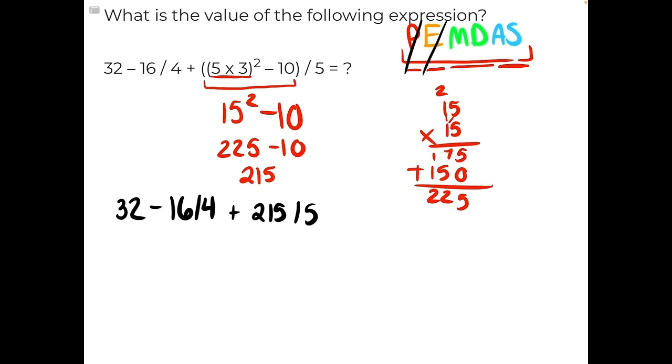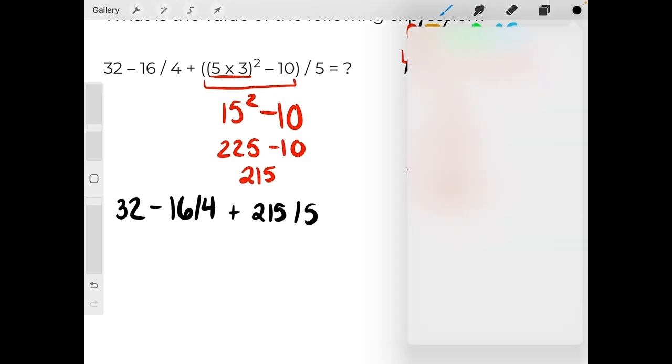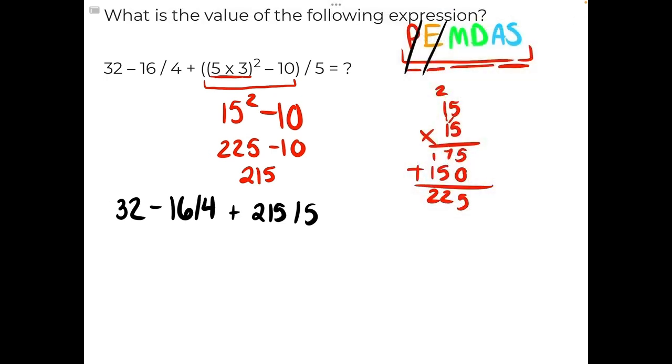There are no exponents, so we can move on to multiplication and division. We have two instances of division, one here and one here. 16 divided by 4 will give us 4.